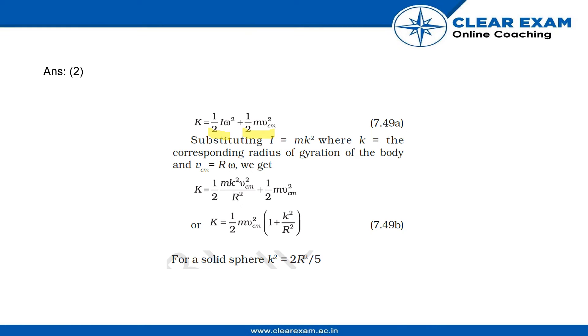The total energy K, which is the sum of Kt plus Kr, is given in equation 7.49A. After substituting the value of I with mk², where k is the corresponding radius of gyration of the body, and Vcm equals Rω, we get this equation.